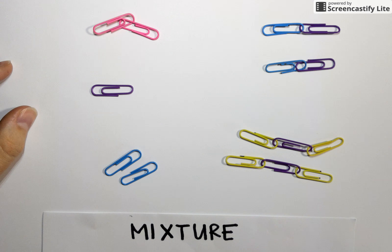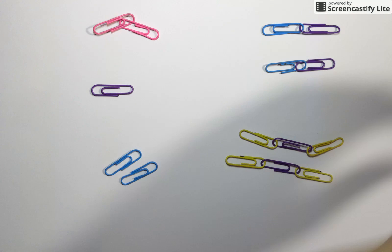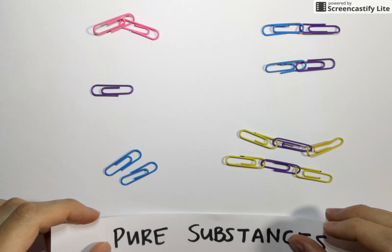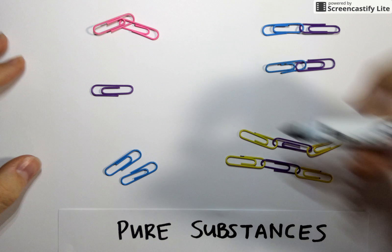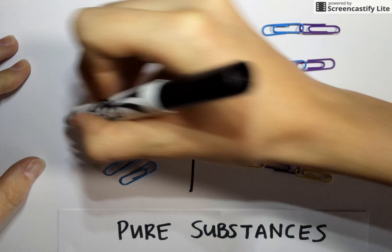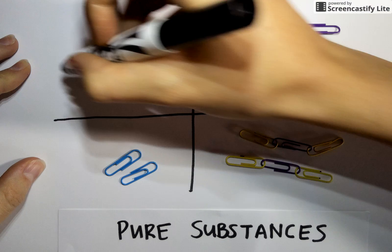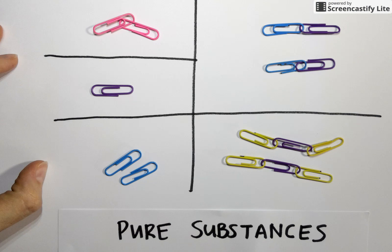Once this sort has been completed, we no longer have a mixture, but instead we have groups of pure substances. So we'll sort of draw lines to show the results of my sort. Pure substances can be characterized further. You can tell there's sort of some differences going on here.